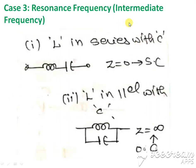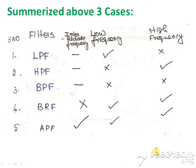Case three is the resonance or intermediate frequency. Here, two sub-cases apply: when L is in series with a capacitor, and when L is in parallel with a capacitor. At resonance frequency, the series LC combination is equivalent to a short circuit, and the parallel LC combination is equivalent to an open circuit. This is very important — series is short circuit, parallel is open circuit.